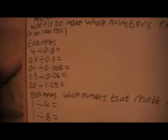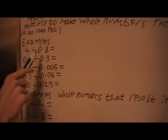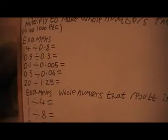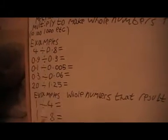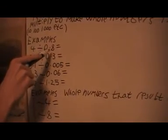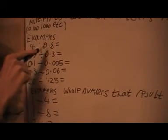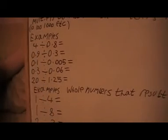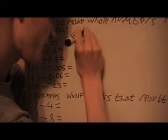Now the first one I've got: 4 divided by 0.8. Now you should know from learning about multiplying tens, hundreds, and thousands that if I multiply this by ten I'll get an 8, which is a whole number. But if I multiply this by ten, I must also multiply that by ten. So then I get a new problem: 40 divided by 8, which is 5.